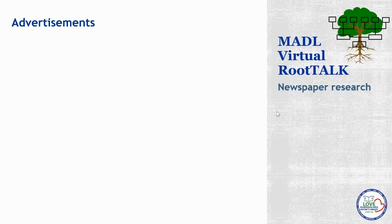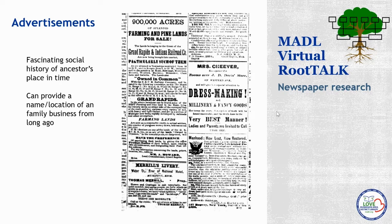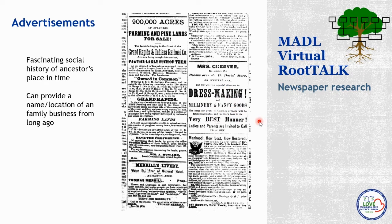Finally, let's take a look at commercial advertisements. Reading the classifieds can make for a fascinating social history study of your ancestors' place and time. Historical newspaper advertisements can also provide a name and location for a family business if you weren't aware it existed. Here we have a newspaper ad from the Muskegon Chronicle — Mrs. Cheever is starting her dressmaking business, from the October 4th, 1871 Chronicle. If Mrs. Cheever was a family member you were searching, we find out she had a dressmaking business at the Davis store on Western Avenue, and she also did millinery and fancy goods.